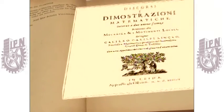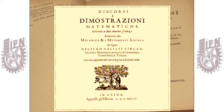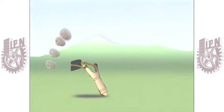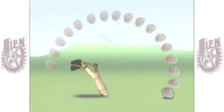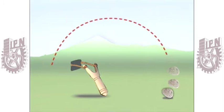En su libro Consideraciones y demostraciones matemáticas sobre dos nuevas ciencias, Galileo afirmaba que mientras un proyectil marcha con movimiento compuesto de horizontal uniforme y naturalmente acelerado hacia abajo, describe en su marcha una semiparábola.